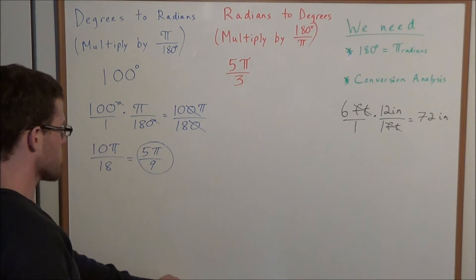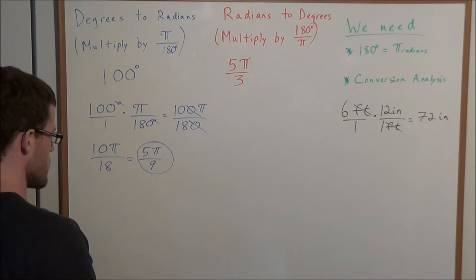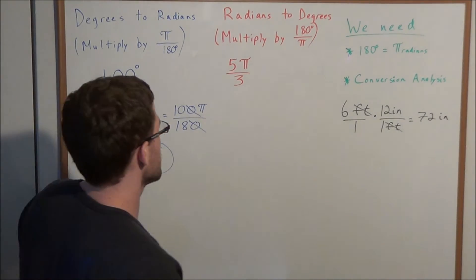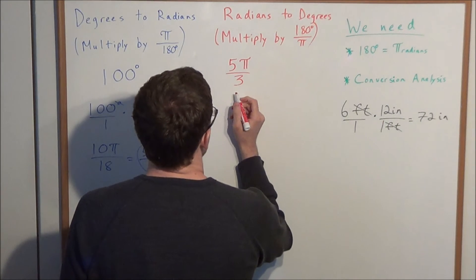And now the next problem, we're going to look at converting from radians to degrees, except now the conversion factor is going to flip. We're going to use 180 degrees over π.